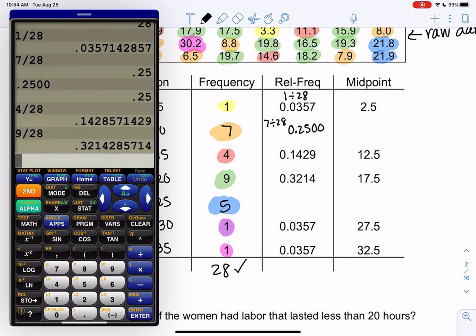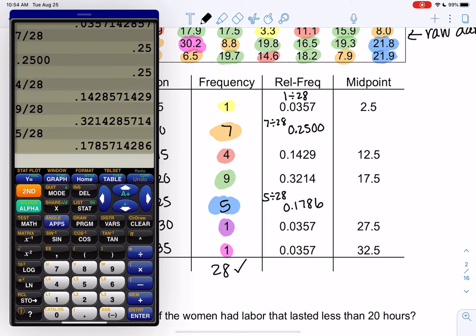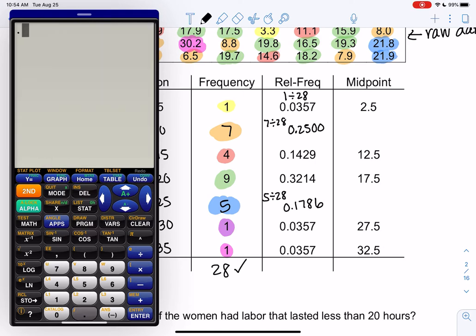Let's do the next one, five divided by 28, point one seven eight six. Then the last two should be the same because they're both one out of 28. Perfect. I'm going to add them up and just make sure they add up to close to one. It might be slightly off due to rounding, but should be very very close to one. Easy to make typos. I got exactly one this time, so perfect.